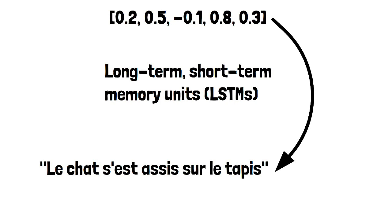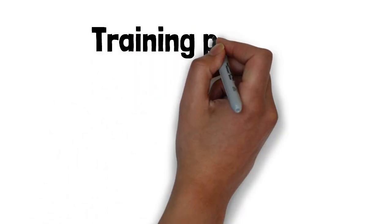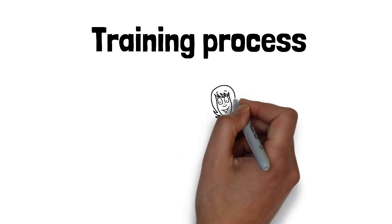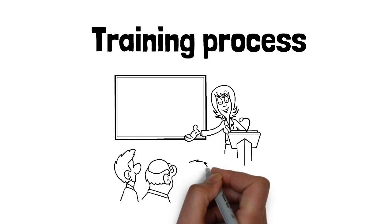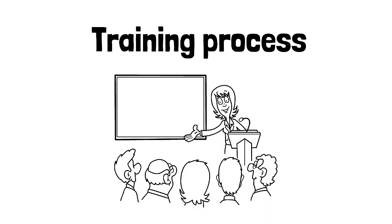It's important to note that the specific mapping between the numerical representation and the corresponding words in the translation is learned during the training process, where the model learns to associate encoded representations with their respective translations. It's like a storyteller, using the encoded information to weave together a narrative that engages the audience.